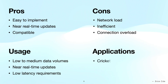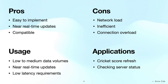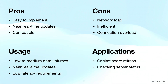Real-world applications of short polling include cricket score refresh — ESPN Cricinfo, a popular site in India for live cricket scores in text format, appears to use short polling. You can verify this by using inspect element and monitoring the network tab to see the request-response pattern. Another application is checking server status — for example, when you spin up an EC2 instance in AWS, the status shows 'pending' while booting. Short polling can periodically send requests to check if the status has changed to 'running', and you can monitor this behavior via the network tab as well.